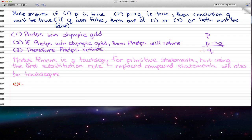The rule argues: if P is true and P implies Q is true, then conclusion Q must be true. Now, if Q was false, then one of P or P implies Q, or both, must be false.